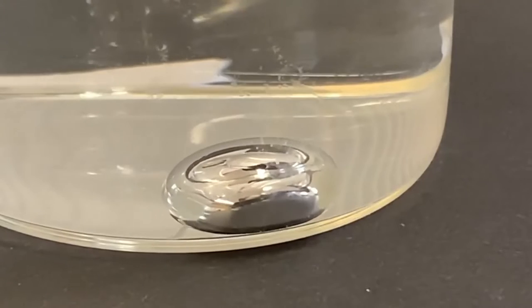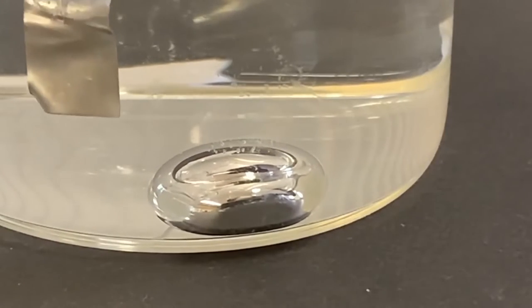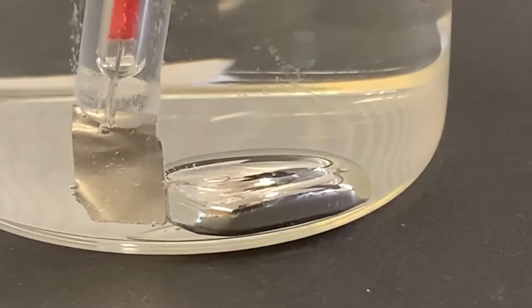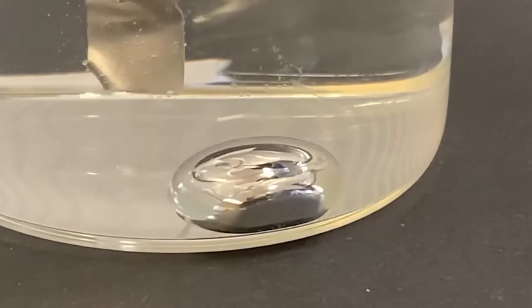When I take the metal away, the gallinstan droplet rebounds to its original shape. Notice that the process can be repeated by alternately touching the droplet with the metal and then removing it.